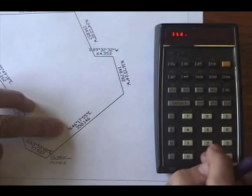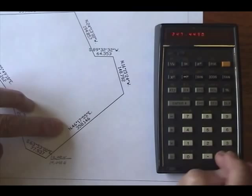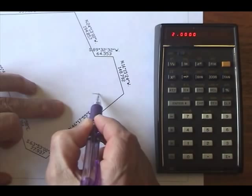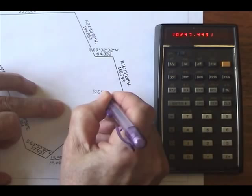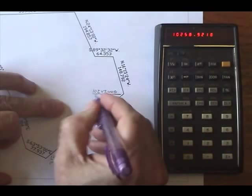The value of the northing here is stored in register 7: 10,247.4431. And register 8: 10,250.9218. I'll continue.